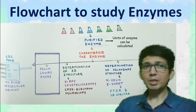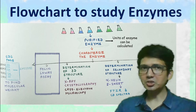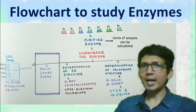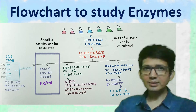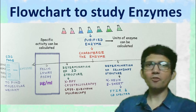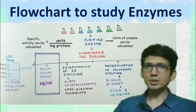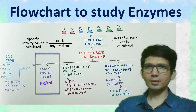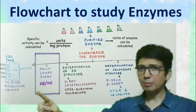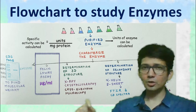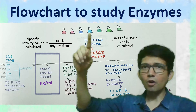Next, estimation of protein by Folin's assay will give us information regarding the concentration of enzyme after purification. Usually, this will be expressed as micrograms per ml. Now, using this data, we can calculate the specific activity of the purified enzyme. The specific activity is units of enzyme present per milligram of protein. Units of enzyme we already know, and the concentration in micrograms can be converted into milligrams. So units of enzyme per milligram of protein will give us the specific activity of the purified enzyme.